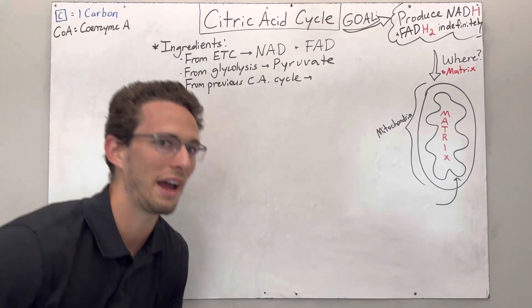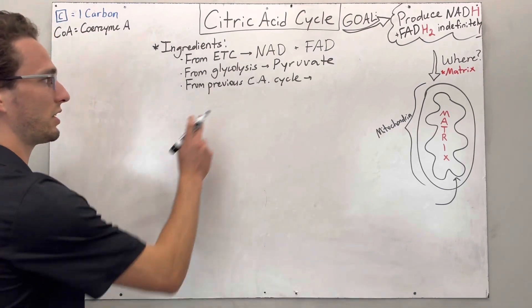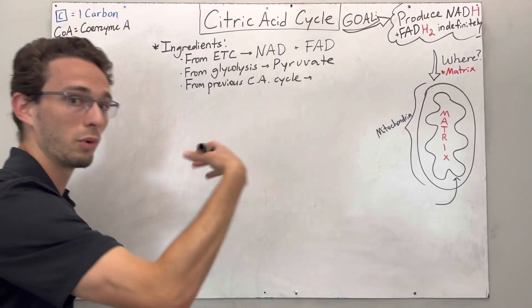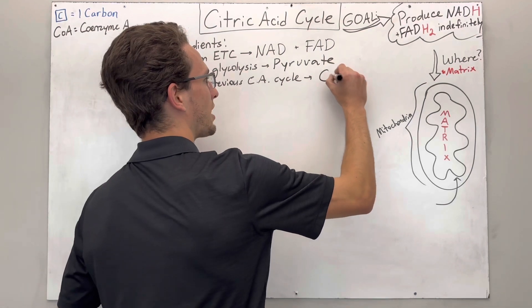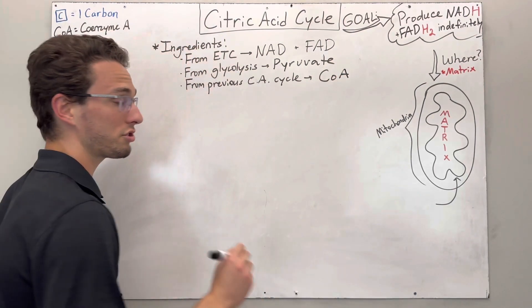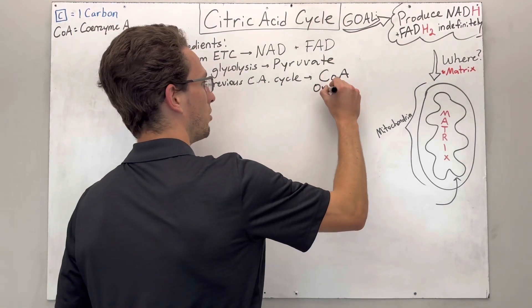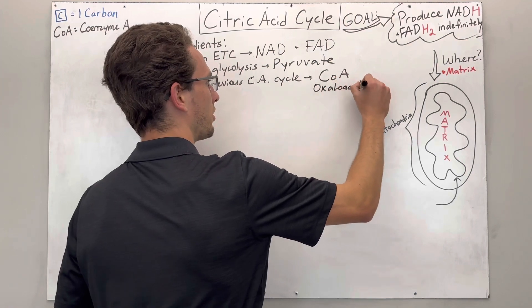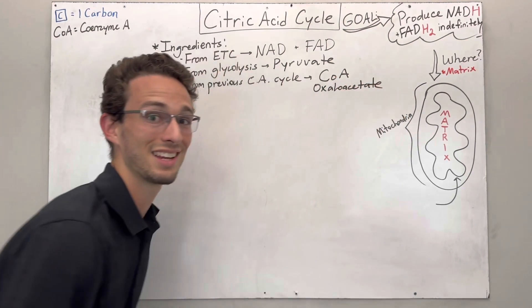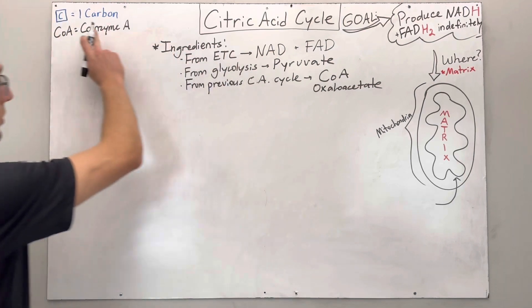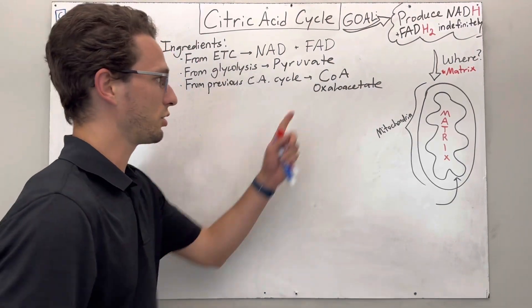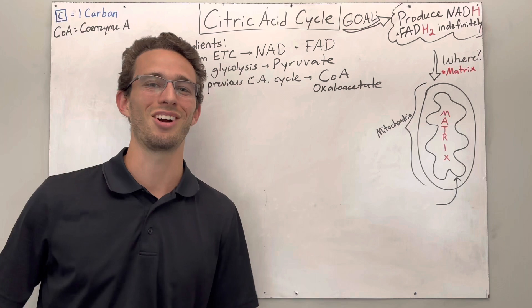Lastly, we will also have two molecules specifically from the previous citric acid cycle, which we'll go through, and that's going to be coenzyme A and it's also going to be oxaloacetate. Big words. Don't get scared. It'll make sense here in a second. So CoA stands for coenzyme A up here and oxaloacetate will be this intermediate. So hey, let's get started.